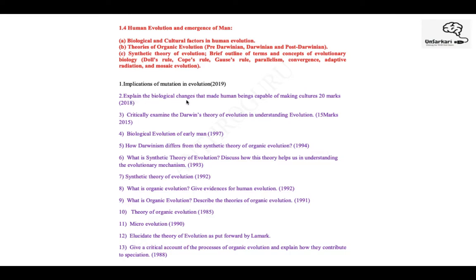In 2018, the question was about the biological changes that made man capable of making cultures — essentially asking about biological evolution. Bipedalism, erect posture, changes in the skull — these are all biological changes that led to the development of culture. The next question critically examines Darwin's theory of evolution, requiring you to know Darwin's theory and its shortcomings for a critical analysis. In 1997 there was a question on biological evolution of early man.